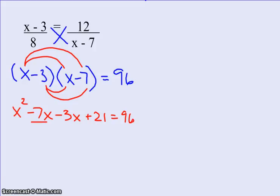I'll clean up that left side a little more by combining like terms: x squared minus 10x plus 21 equals 96. Now where do I go from here? How do I solve for x?